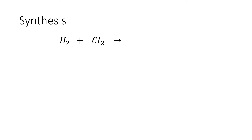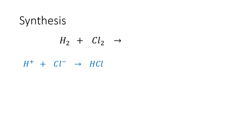For the reaction between hydrogen and chlorine, both have a subscript of 2 because they are both diatomic elements. H and Cl form HCl, or hydrochloric acid, which will be the product of this reaction. This chemical equation is not yet balanced. For calcium and bromine, Ca plus Br2 — bromine has a subscript of 2, making it a diatomic element.